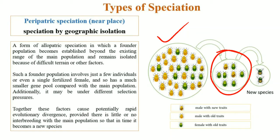Individuals with new traits in a larger population may have their mutations diluted, but in a smaller population these mutations are more likely to be passed on. With the passage of time, as this smaller population inbreeds, their gene pool and genetic make-up will become different from that of the parent population, resulting in the formation of new species. Rapid evolutionary divergence occurs because the small population is not breeding with the main population for a longer period of time.